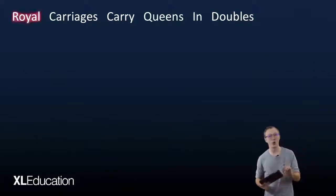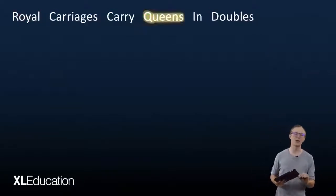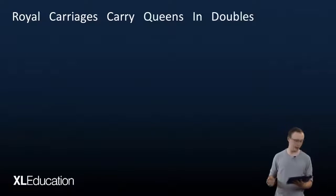So I'll repeat that: royal carriages carry queens in doubles. Now what on earth does that mean?